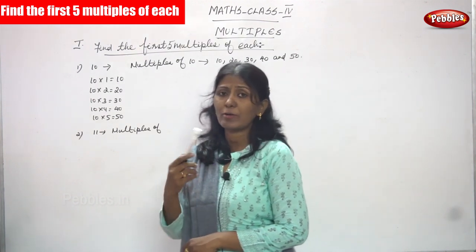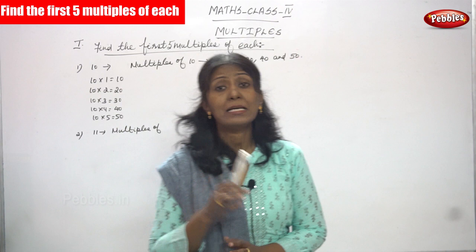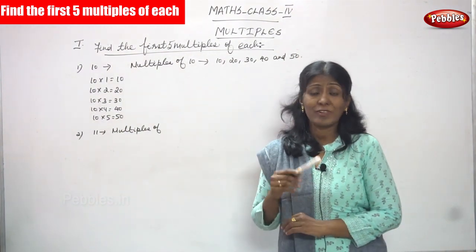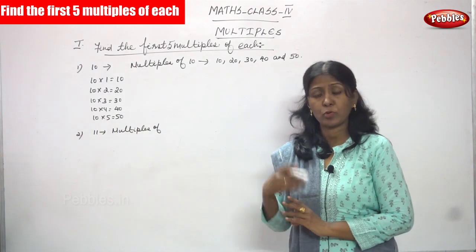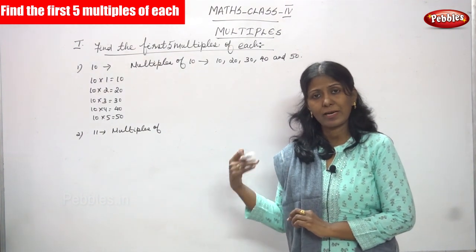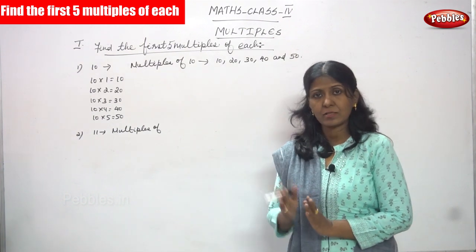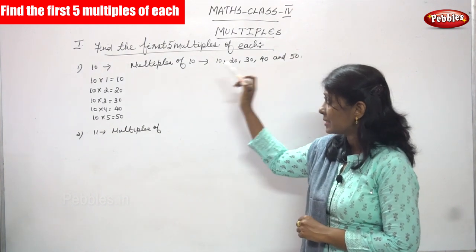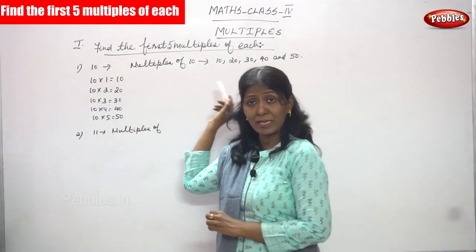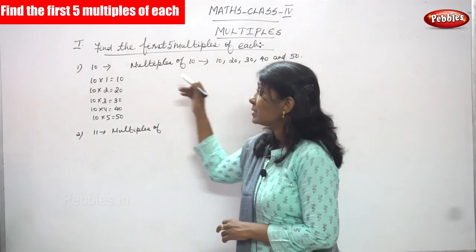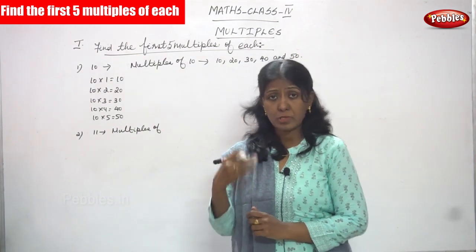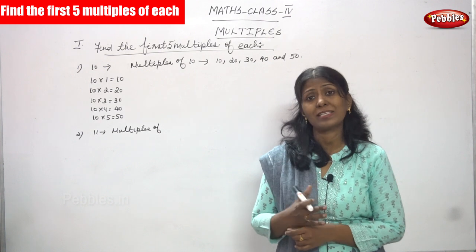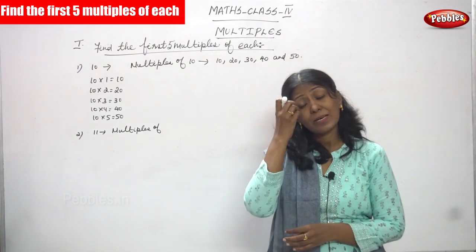To find the multiples of 10, you have to write the multiplication table. 10 into 1 is equal to 10. Here, first 5 multiples only you have to find — it is not necessary to find more multiples. Whatever multiples you have to find out, you use the multiplication table. That is what we are using here.